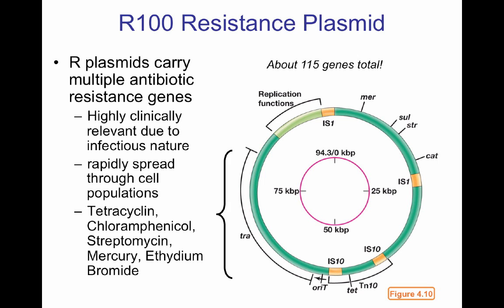The R100 resistant plasmid — the R-plasmid — has about 115 genes, most for antibiotic resistance. It is the bane of the medical community because it allows microorganisms to become resistant to many clinically used antibiotics. It spreads rapidly through bacterial populations and includes resistance to tetracycline, chloramphenicol, streptomycin, mercury, and ethidium bromide. It also has IS sequences allowing integration and contains a transposon called Tn10.